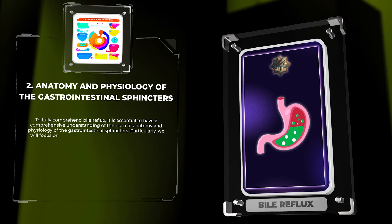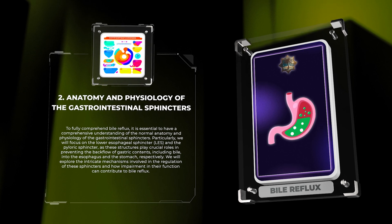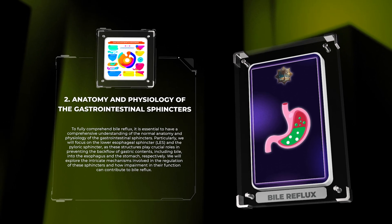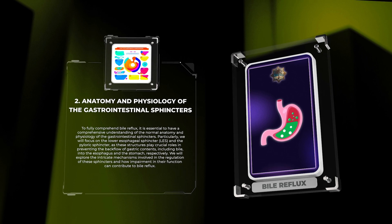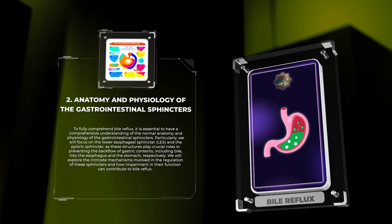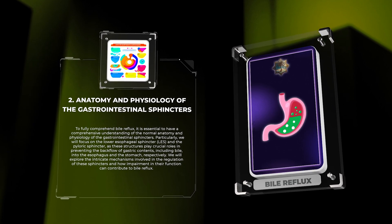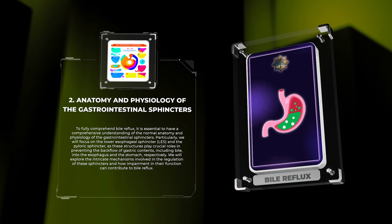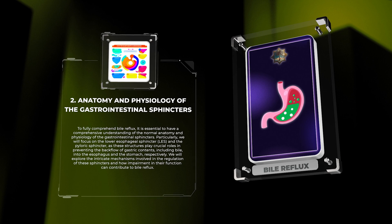To fully comprehend bile reflux, it is essential to have a comprehensive understanding of the normal anatomy and physiology of the gastrointestinal sphincters. Particularly, we will focus on the lower esophageal sphincter (LES) and the pyloric sphincter, as these structures play crucial roles in preventing the backflow of gastric contents, including bile, into the esophagus and the stomach, respectively.